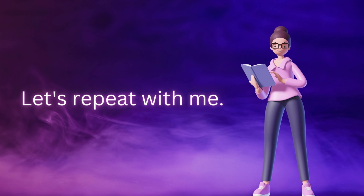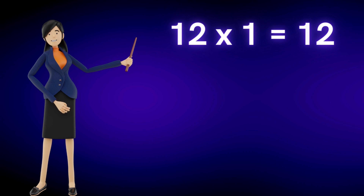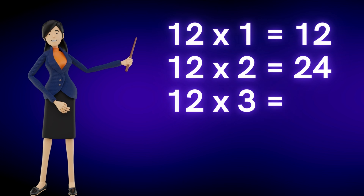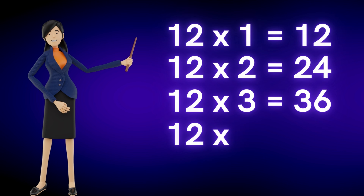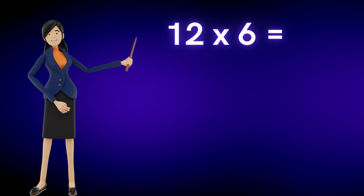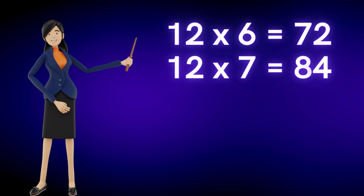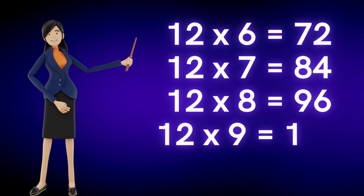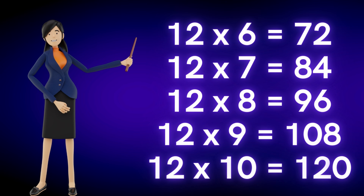Let's repeat with me. 12 1s are 12. 12 2s are 24. 12 3s are 36. 12 4s are 48. 12 5s are 60. 12 6s are 72. 12 7s are 84. 12 8s are 96. 12 9s are 108. 12 10s are 120.